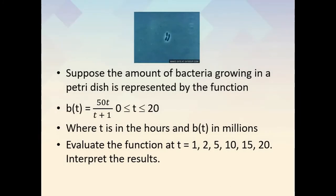Suppose the amount of bacteria growing in a petri dish is represented by the function b of t is equal to 50t over t plus 1, where 0 is less than or equal to t is less than or equal to 20. In other words, it is between 0 to 20 hours, where t is the hours and b of t is in millions. Evaluate the function at t equal to 1, 2, 5, 10, 15, and 20, then interpret the results.